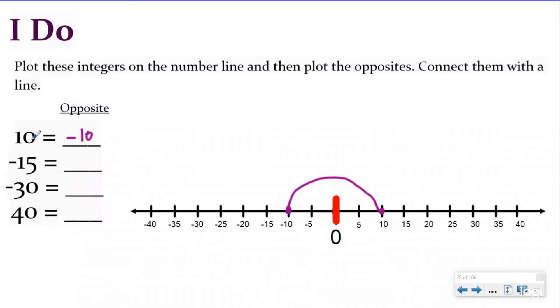Now our next integer is negative 15. So we want to do five, 10, negative 15 right here. The opposite of negative 15 would be positive 15, right? So it's really not that hard, but it's a concept a lot of people don't think about. And it's going to be really helpful as you get deeper into negative numbers, understanding negatives and positives and the opposite. So our positive 15 is right here. And then we're going to connect those with a line.